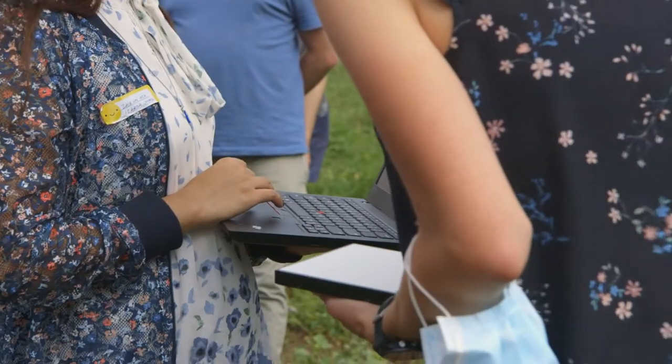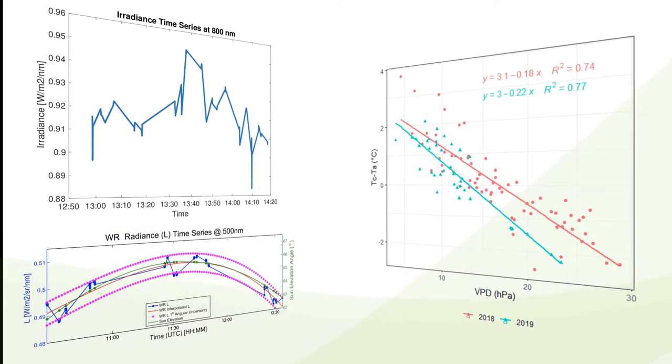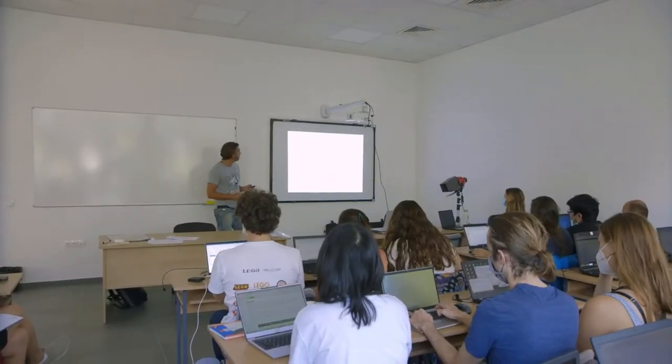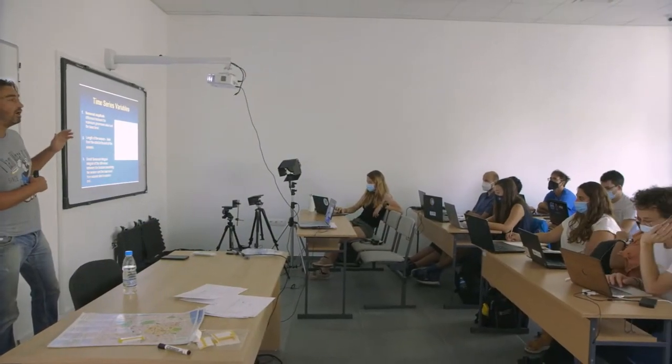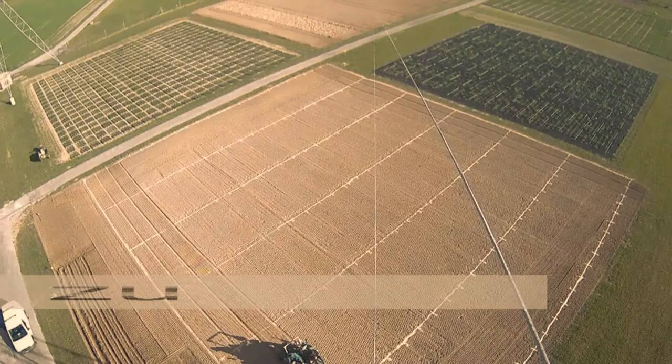We do that to answer questions like, for instance, how is photosynthesis changing during the day, or where, when and how do plants respond to water stress? Using images from drones to satellites and models, we can assess how plants and ecosystems change over space and time.